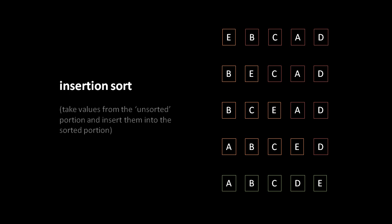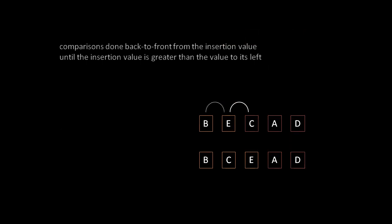One thing to note about insertion sort is that it's not until after the very last pass that we know for sure every item is in its proper position. The sorted list is growing, and some items may end up in their final position in earlier passes, but we can only confirm full sorting after the last pass. The actual insertion process works by comparing the value to insert with the value to its left — if the insertion value is less, we swap them and repeat, walking the value left until it either reaches the front of the list or finds a value to its left that is smaller.